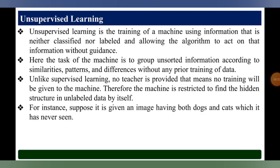Now we come to the next point: unsupervised learning. Unsupervised learning is the training of a machine using information that is neither classified nor labeled, and allowing the algorithm to act on that information without guidance. The task of the machine is to group unsorted information according to similarities, patterns, and differences without any prior training of data. Unlike supervised learning, no teacher is provided, meaning no training will be given to the machine.